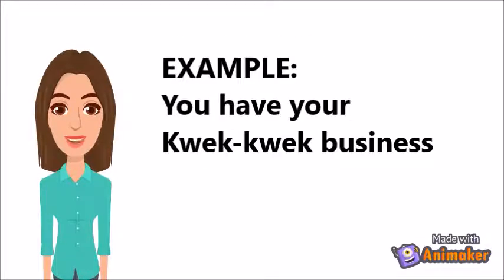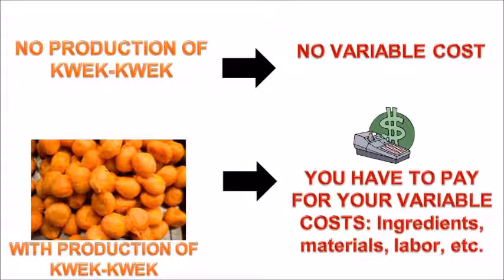For example, in your quick-quick business: if you don't produce quick-quick, then you don't incur a variable cost — such as the ingredient cost for eggs. But if you produce, let's say, 10 quick-quicks, then you also need 10 pieces of eggs. Thus, the variable cost depends on your level of production.